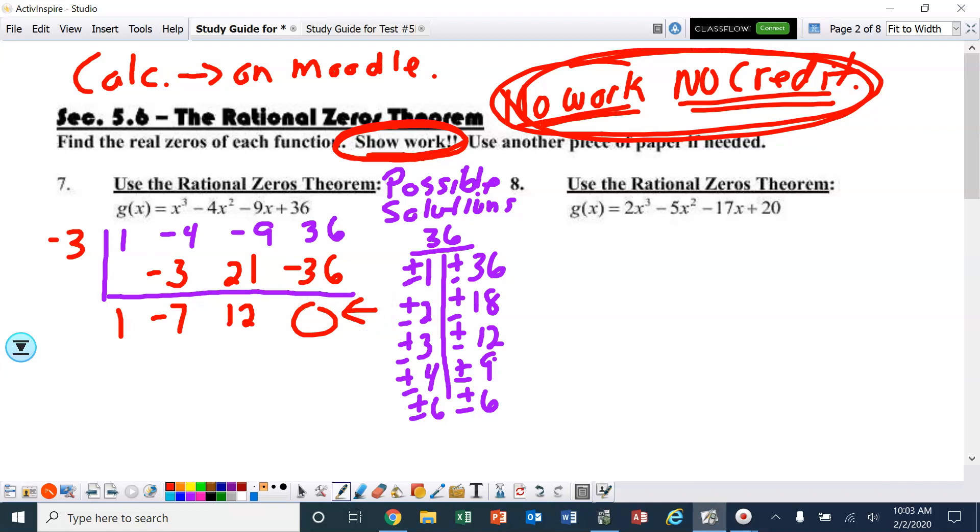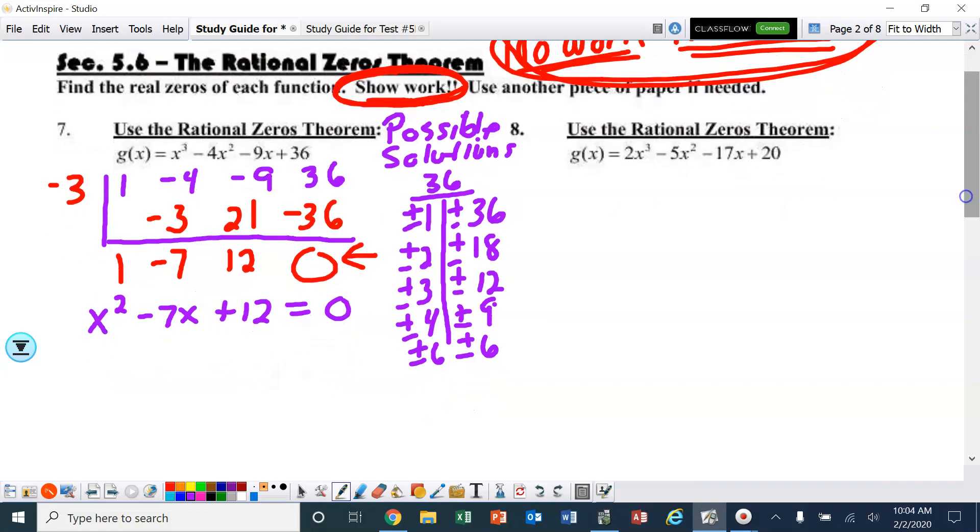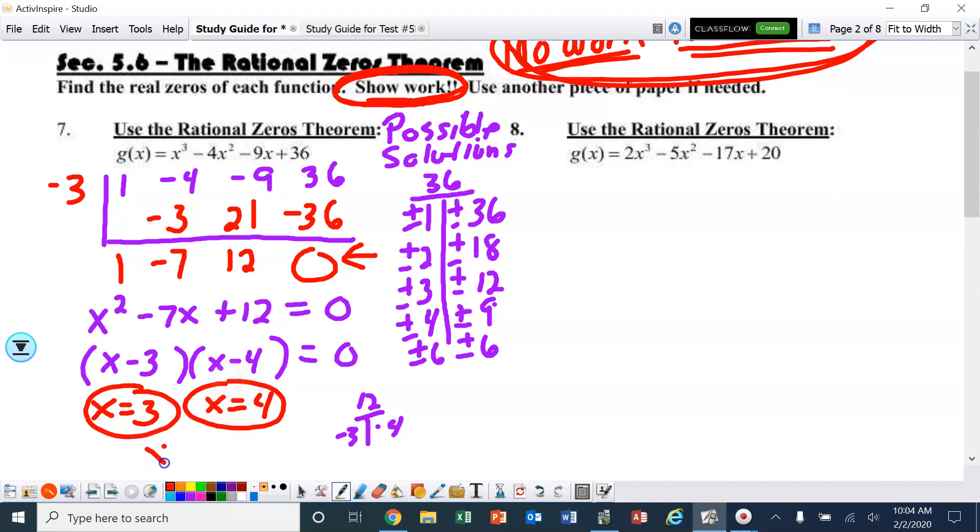Now I'm going to rewrite this as x squared minus 7x plus 12, set it equal to 0, and factor it. Factors of 12 that add up to -7 are -3 and -4. So my other two solutions are positive 3 and positive 4. The three solutions are 3, 4, and -3.